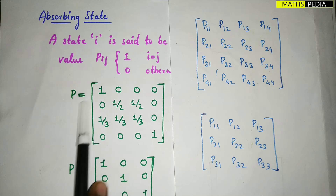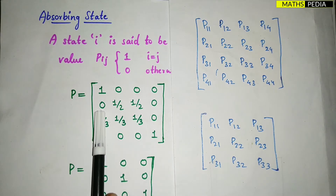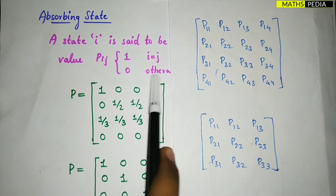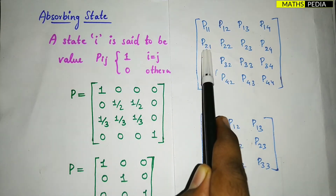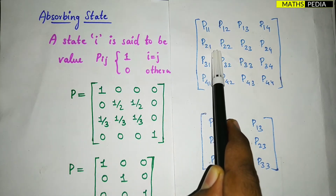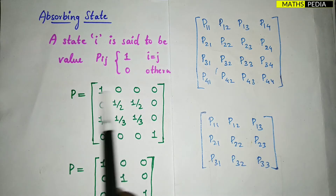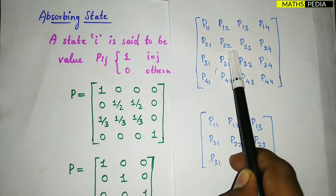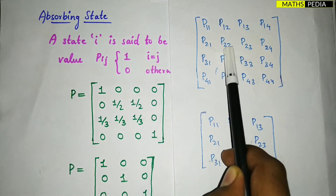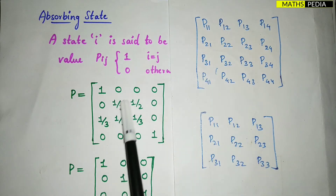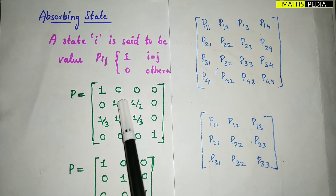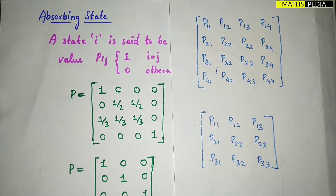Let us see the second row. P21 — the i and j values are not equal, 2 and 1 are not equal, so it should be 0, and it is 0. The second element of the second row is P22 — i and j are equal, so it should be 1. But here it is 1/2. Therefore this row is not in absorbing state.